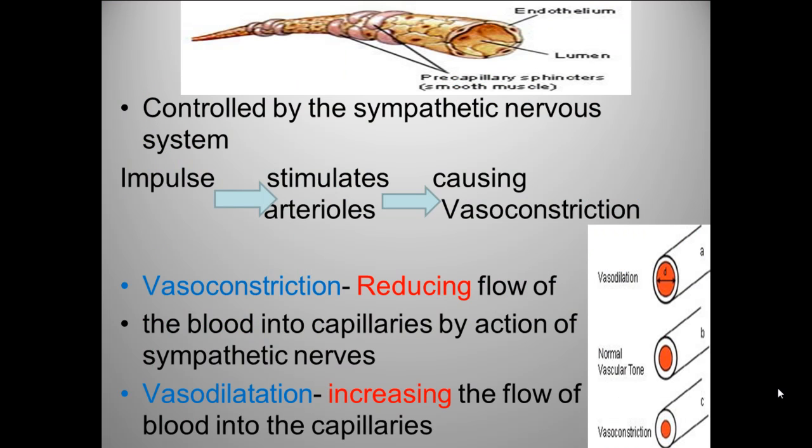The two methods that cause the redirection of blood: one is vasoconstriction, which means to reduce the flow of blood into the capillaries by action of the sympathetic nerves; and vasodilation, which increases the flow of blood into the capillaries. It's specifically the arterioles that contract and cause this, which is why they have large amounts of smooth muscle material within their walls. That smooth muscle can contract to constrict blood flow, or relax to dilate and allow more blood flow to that area.